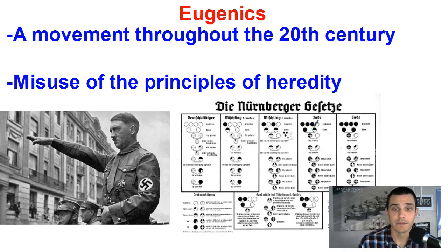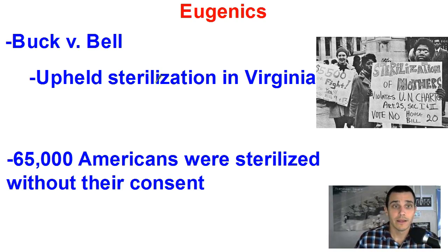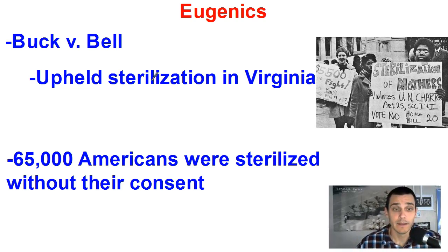Now we know scientifically this is just silliness, but back then they were using this quote-unquote science to do some pretty terrible things. In the state of Virginia in particular, a court case by the name of Buck v. Bell upheld sterilization and made it legal. Across the United States, 65,000 Americans were sterilized.